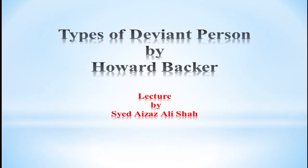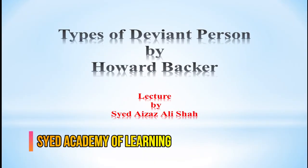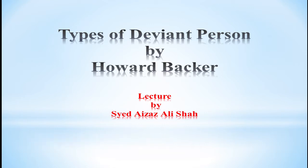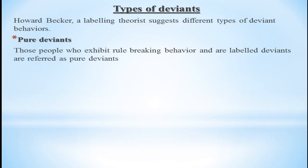Hello everyone, I'm back from the Sayyid Academy of Learning platform. I'll make a short video clip for students about the types of deviant persons as defined by Howard Becker. Howard Becker's labeling theory states that no behavior is a deviant behavior until and unless it is labeled by an authority or by an individual.